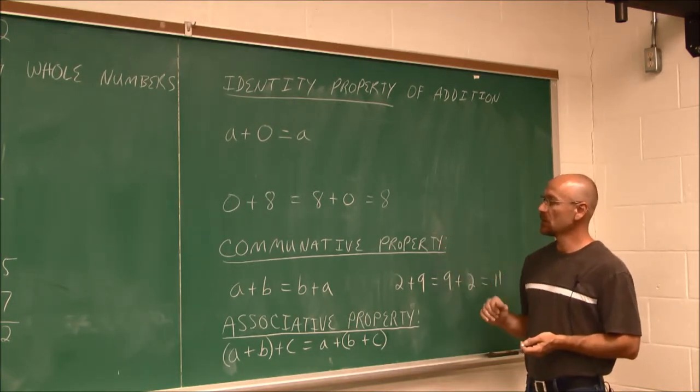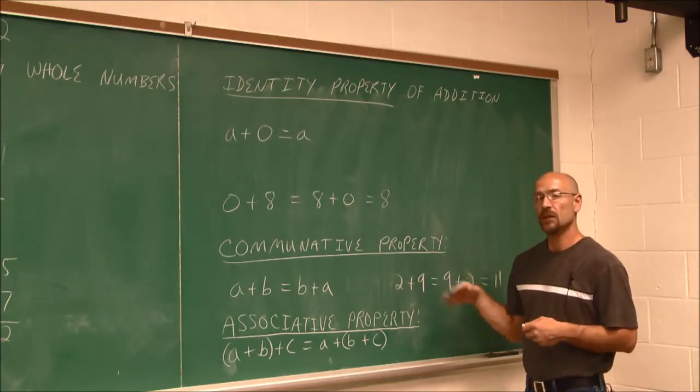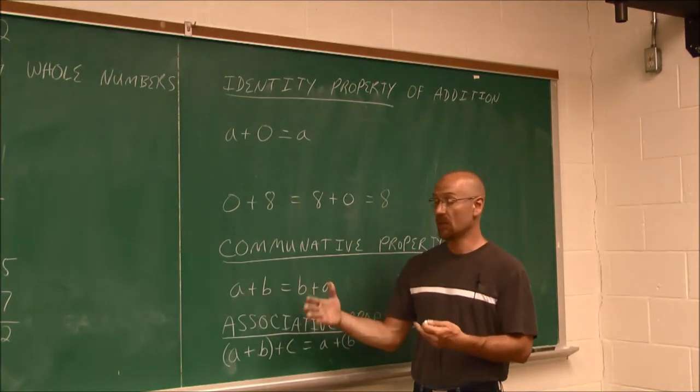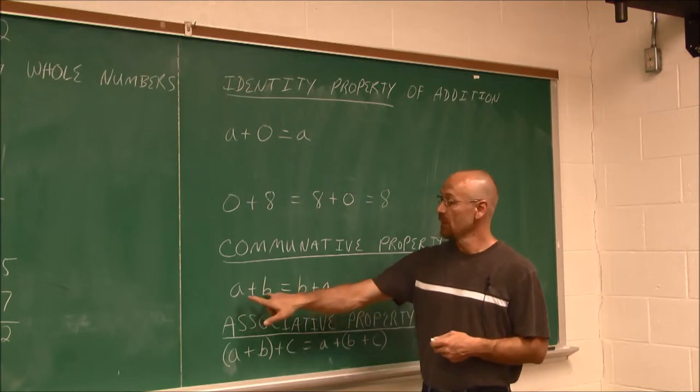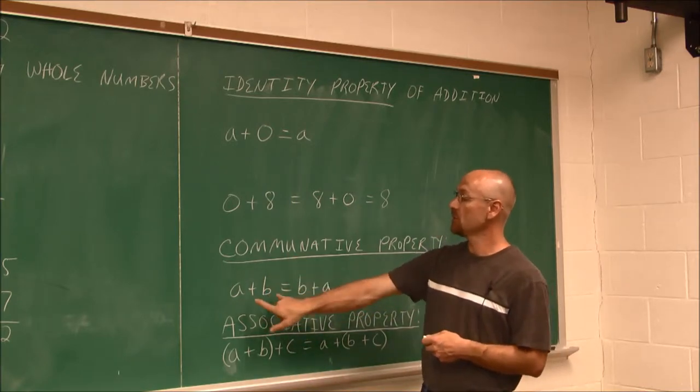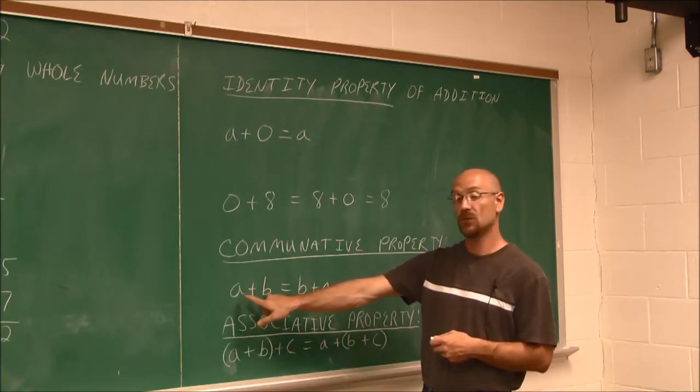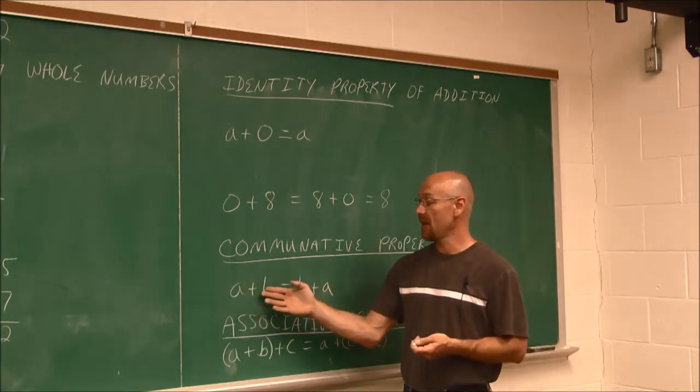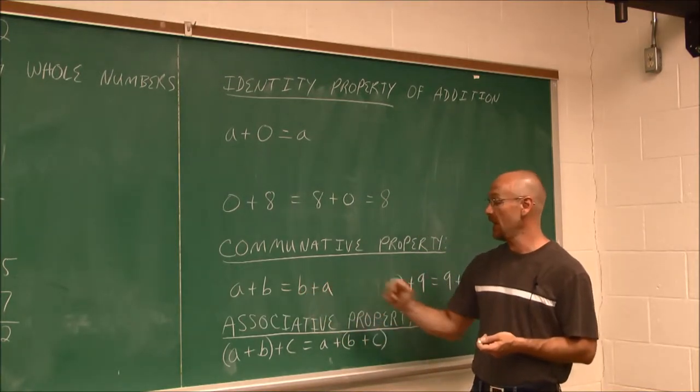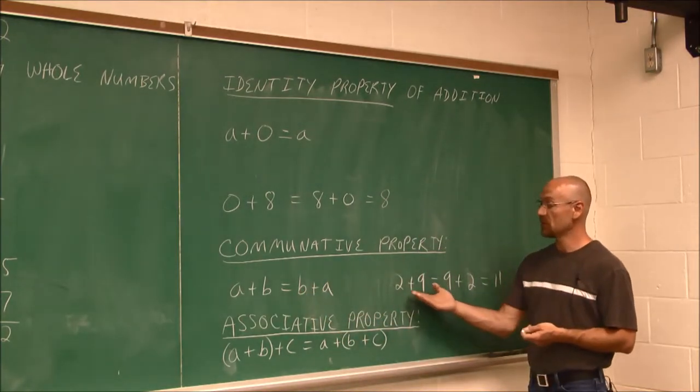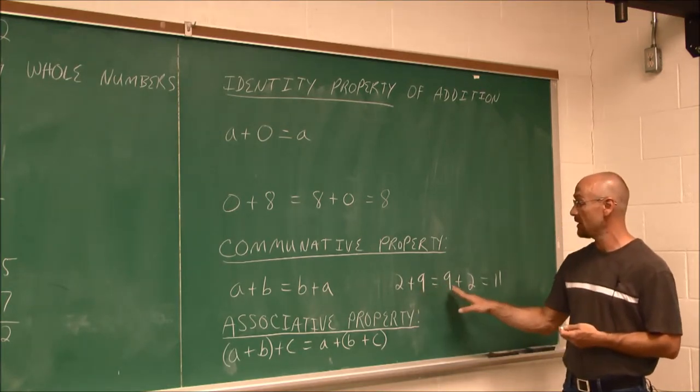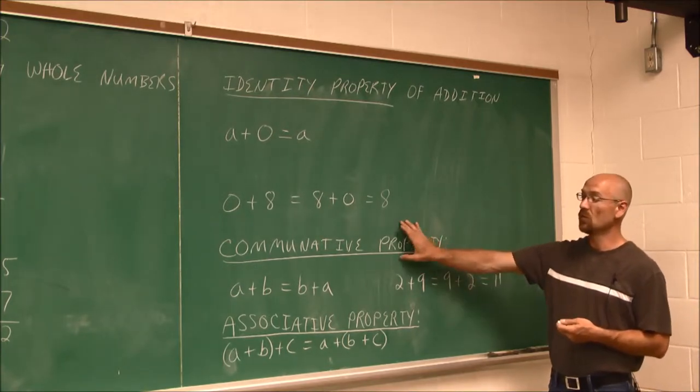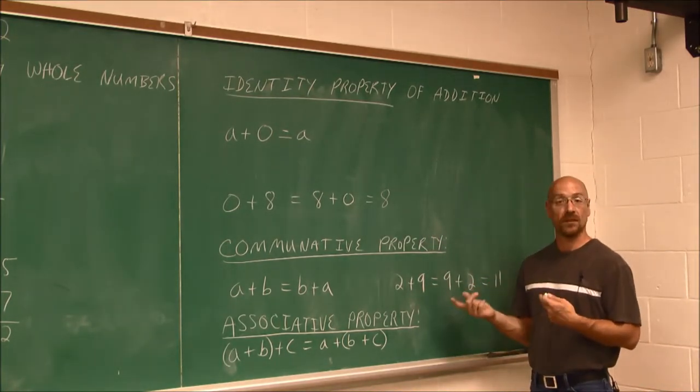The next we're going to look at is the commutative property. Commutative property just means if we have two digits, and a and b are just our variables, this is some number, this is some other number. The commutative property states that if I add two values, the order in which I add them doesn't matter. So if I add a plus b, it's the same thing as b plus a. My example here is 2 plus 9. 2 plus 9 is the same thing as 9 plus 2. Both will result in 11. So if we have two values, we can use the commutative property and add them in any order we choose.